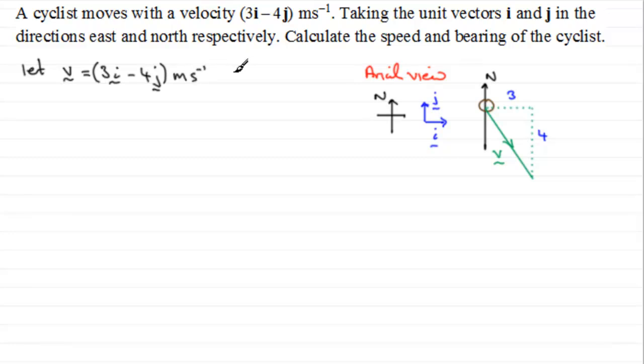If we're to find out the speed of the cyclist, speed is the magnitude of velocity. In other words it's represented by this length of the vector. So to get the magnitude of a vector, all we need to do is to use Pythagoras' theorem.